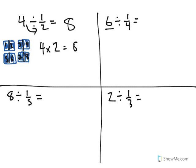So 6 wholes divided into 1 fourth each. If we took 6 wholes, split each of them into fourths, there would be a total of 6 times 4, 24 fourths.